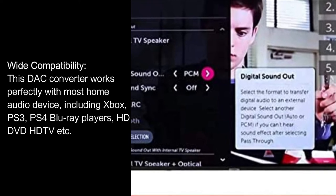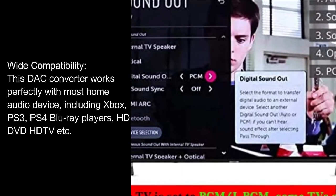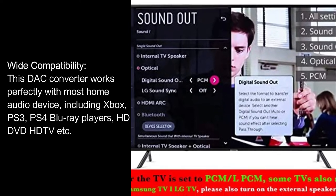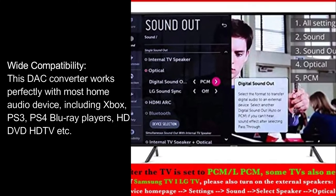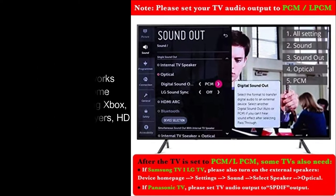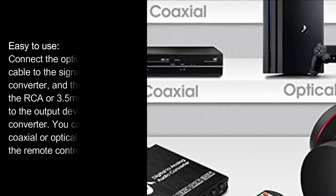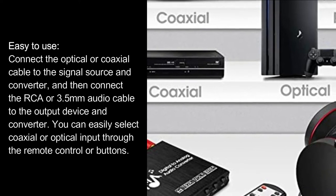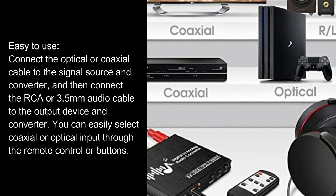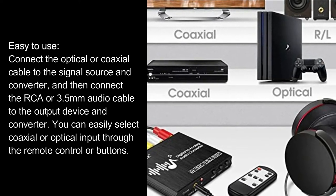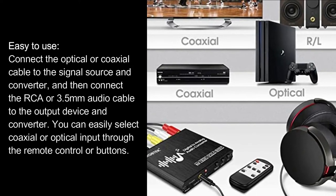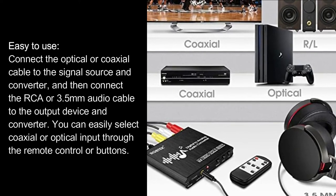Wide Compatibility: This DAC converter works perfectly with most home audio devices, including Xbox, PS3, PS4, Blu-ray players, HD DVD, HDTV, and more. Easy to use: connect the optical or coaxial cable to the signal source and converter, then connect the RCA or 3.5mm audio cable to the output device and converter. You can easily select coaxial or optical input through the remote control or buttons.